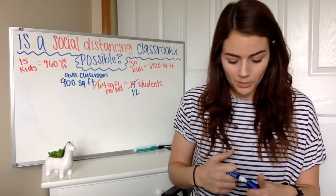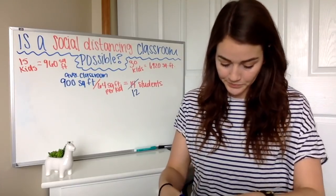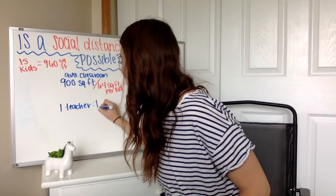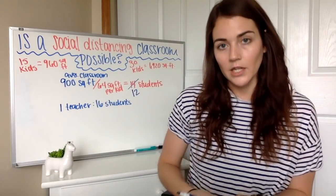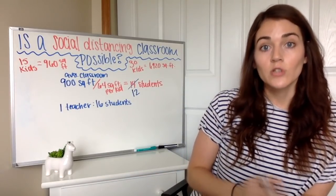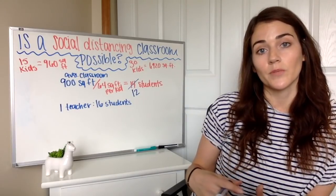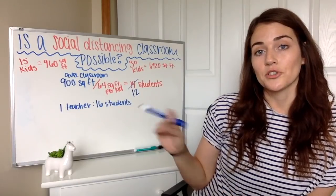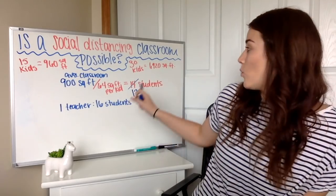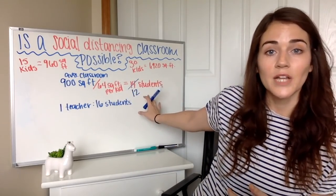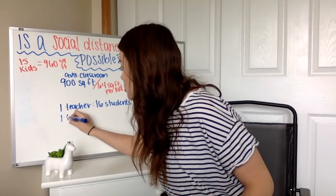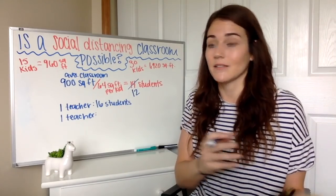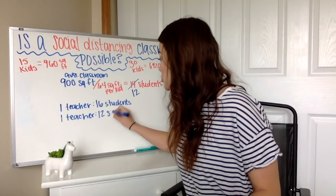That's what I want to look at next — would this even be possible with teachers? Remember, this is a minimum square footage and we'd still need room for the teacher to walk around. So instead of 14 students I said it was actually 12 students — I took up the space of two students for the teacher to give some extra space to walk around. On average, the teacher-to-student ratio in U.S. high schools is one teacher for every 16 students.